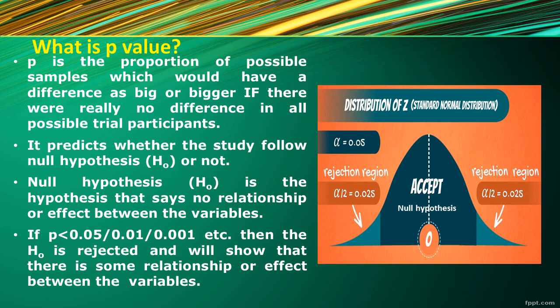What is the p-value and why is it so important in deciding the conclusions of research studies? The p-value is defined as the probability of obtaining a result equal to or more extreme than what was actually observed. It was first introduced by Karl Pearson in his chi-square test. P is also used for the proportion of possible samples, which may seem to have no difference at all, but the proportion of samples may have a bigger difference across all participants.